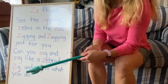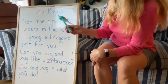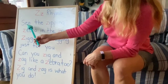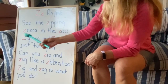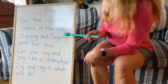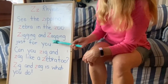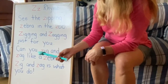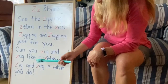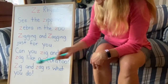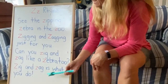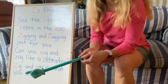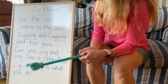This is our Z rhyme. I'm going to read it to you. See the zipping zebra in the zoo? Zigging and zagging just for you. Can you zig and zag like a zebra too? Zig and zag is what you do. Let's look for the Z words in this rhyme.